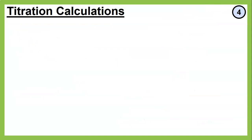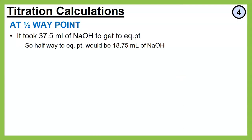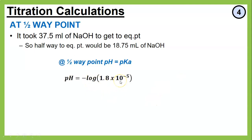Now we go backwards to find the halfway point. If it took 37.5 mL to reach the equivalence point, the halfway point is at 18.75 mL. At the halfway point, pH = pKa. Since we were given the Ka, we take negative log of Ka to get pKa = 4.74. At 18.75 mL, we plot a point at pH 4.74.